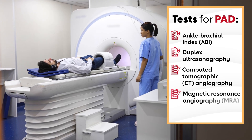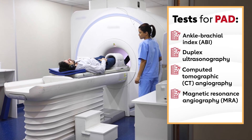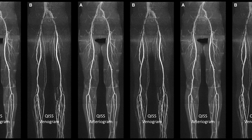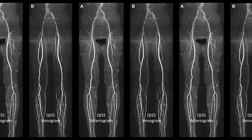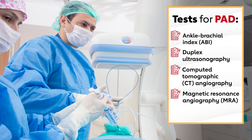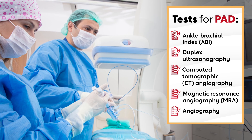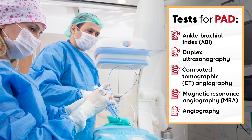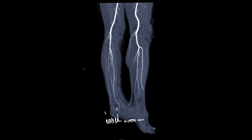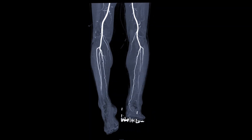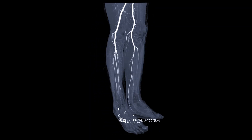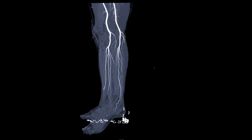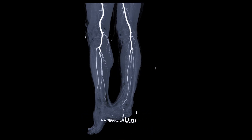Magnetic resonance angiography or MRA provides cross-sectional images like a CT, but without the x-rays. And angiography: during an angiogram, which is sometimes called an arteriogram, your doctor will inject a contrast dye into the artery and take x-rays to see blood flow in the leg arteries. This helps to locate any blockages.